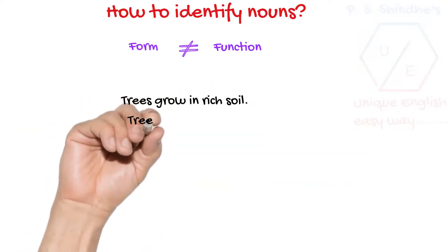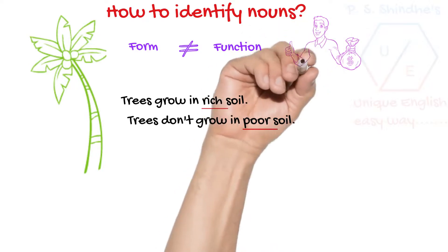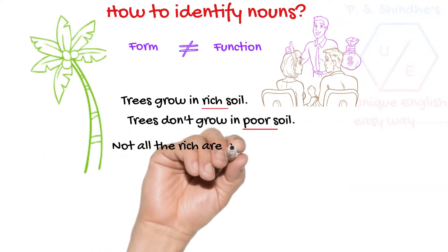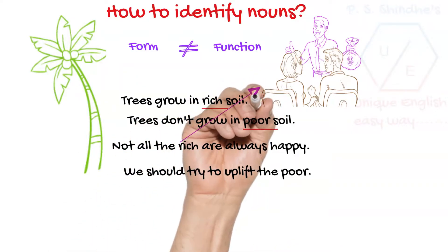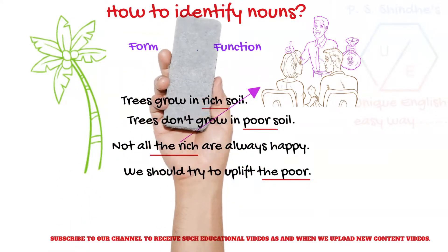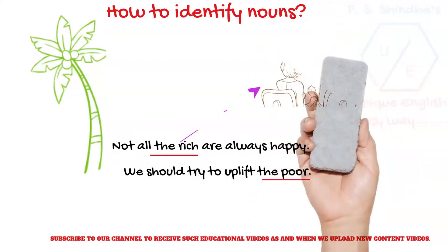Two more examples. Trees grow in rich soil. Trees don't grow in poor soil. Not all the rich are always happy. We should try to uplift the poor. Here also, the words rich and poor are doing both the activities. They are nouns as well as adjectives.